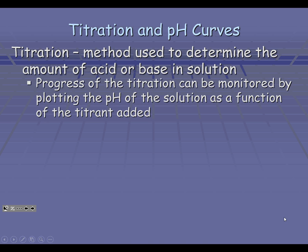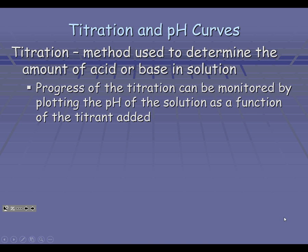Titration is the method used to determine the amount of acid or base in solution. The progress of a titration can be monitored by plotting the pH of the solution as a function of the titrant that is added. This is where we come up with our different pH curves, and there are three types of curves that we will look at in class as a review of titration. Hopefully we will even be able to do a titration using our pH meter to monitor the pH as we add our titrant in.